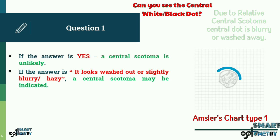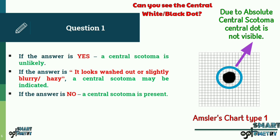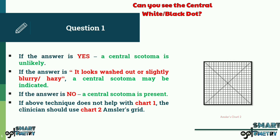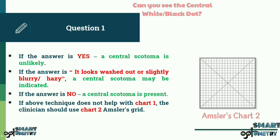If the answer is no, a central scotoma is present. The patient is then asked to outline the borders of the defect covering the central dot with a finger or a pen on the grid. If the above technique does not help with chart 1, the clinician should use chart 2 Amsler's grid.